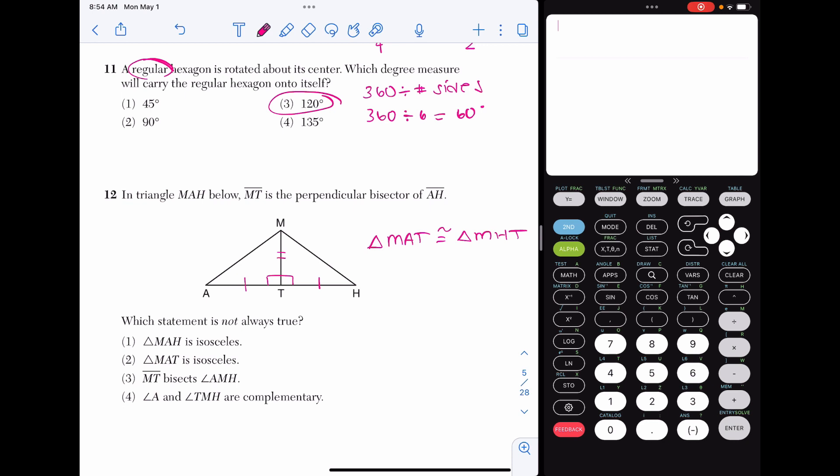Choice one says that triangle MAH is isosceles. That is definitely true because AM and HM are corresponding sides in congruent triangles. So those are definitely congruent. Choice two says triangle MAT is isosceles. That could be the case, but I have actually nothing to back that up here because it's only talking about one of the triangles. So this is a question mark for me. Choice three, MT bisects angle AMH. That's true because we know these two angles up here are congruent. And angle A and angle TMH are complementary. That's definitely true because a triangle has 180 degrees. If we know one angle is already 90, the other two must add up to 90 as well. So our answer here, what is not always true, is going to be choice two, that triangle MAT is isosceles. Head to the next video in this playlist to catch the answers to 13 through 24.